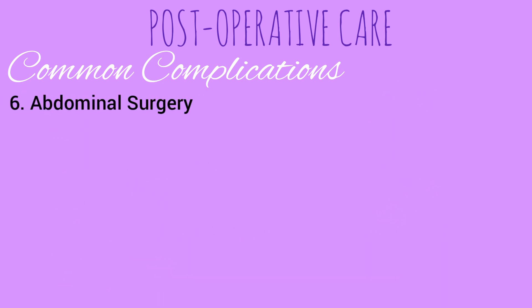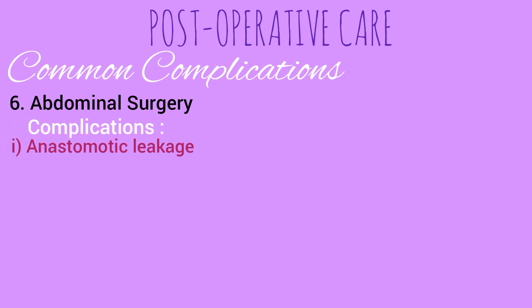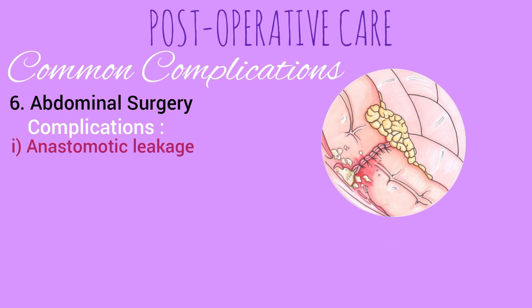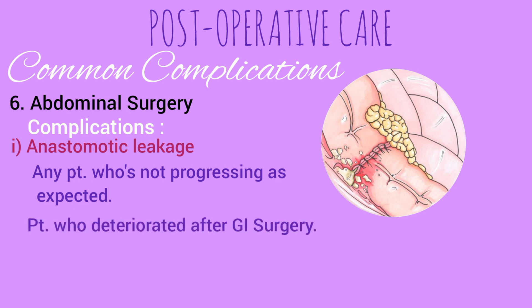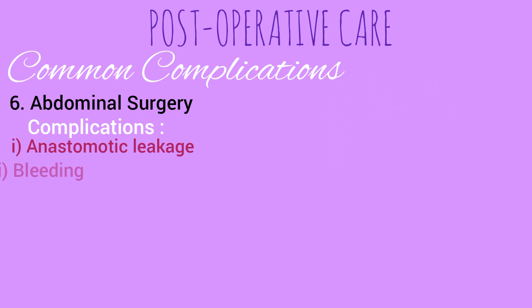After abdominal surgery, the main complications to look out for are anastomotic leakage — a leak of luminal contents from a surgical joint. Any patient who is not progressing as expected or who deteriorates after GI surgery should be considered to have an anastomotic leak until proven otherwise. Bleeding may also be a complication.